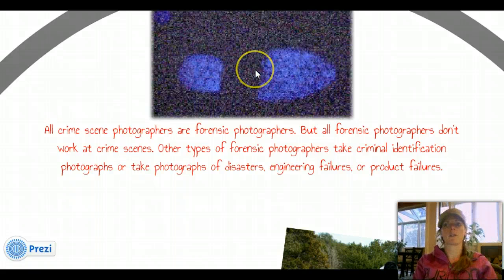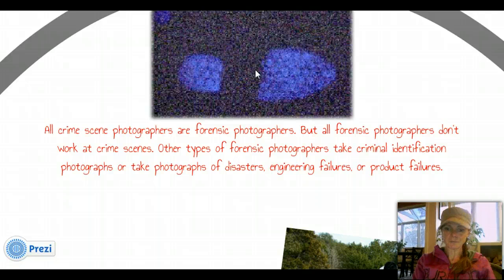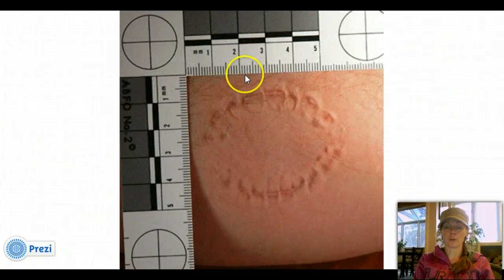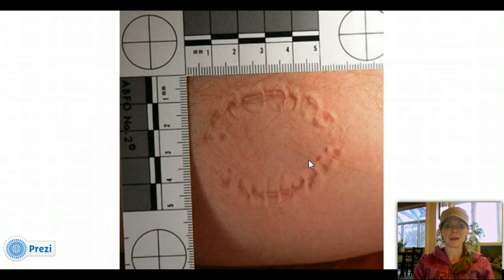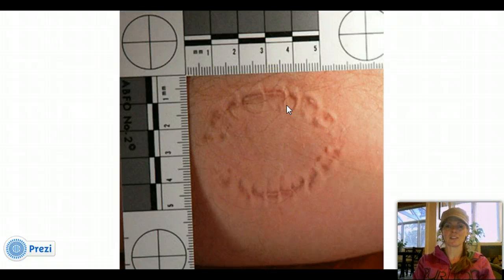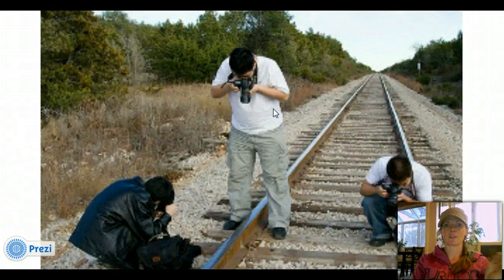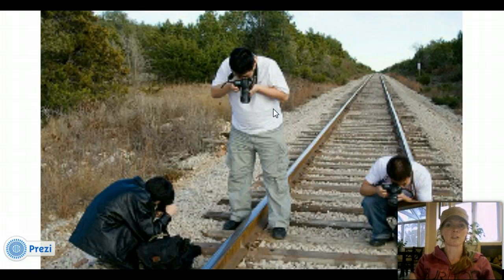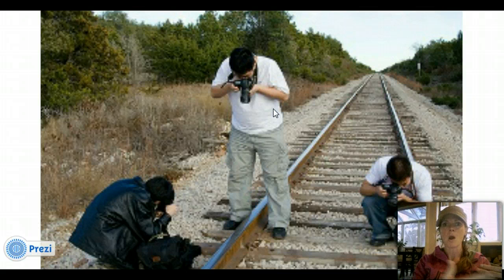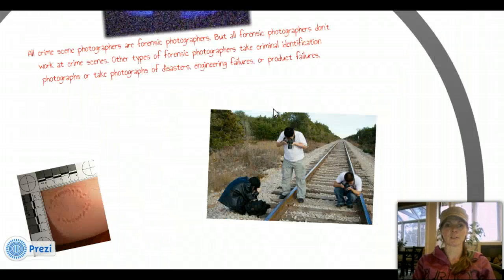Forensic photographers can be kind of all across the board. Other types of forensic photographers take criminal identification photographs, photographs of disasters, engineering failures, product failures, and many other things. So it's not just crime scene photographs that forensic photographers take — they're doing other things besides just crime. Here are some photographs of what a crime scene photographer would do, such as bite marks on a victim. Whether this person is dead or alive, bite marks are clear evidence.